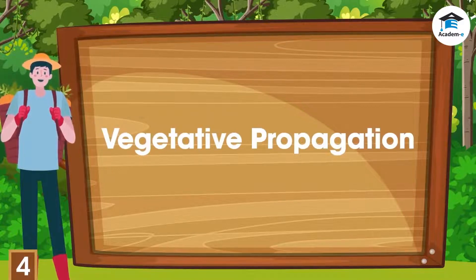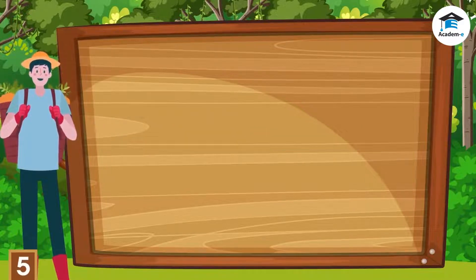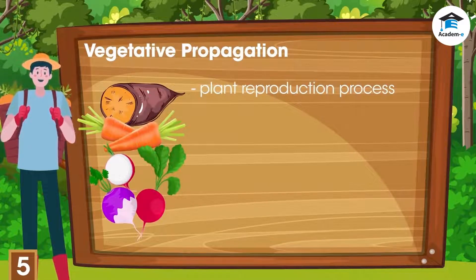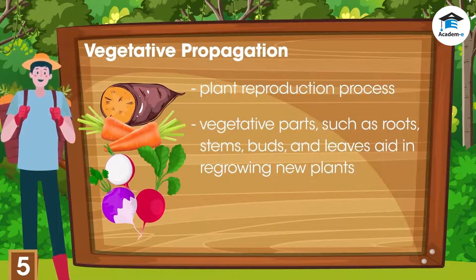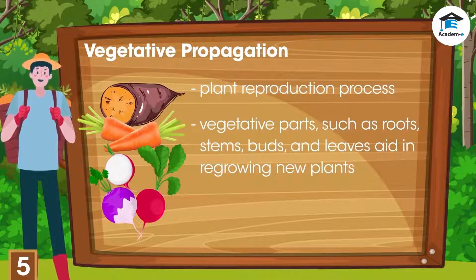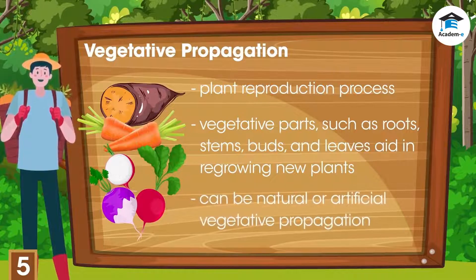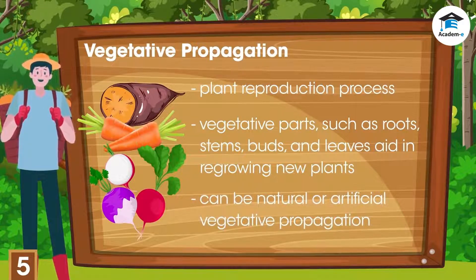Vegetative propagation is a plant reproduction process wherein the vegetative parts — which include the roots, stems, buds, and leaves — instead of seeds and spores of the parent plant, aid in regrowing new plants. It can be natural or artificial vegetative propagation.